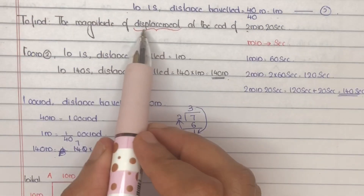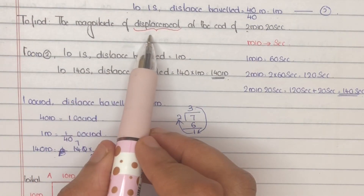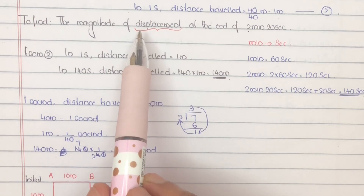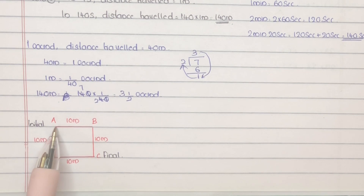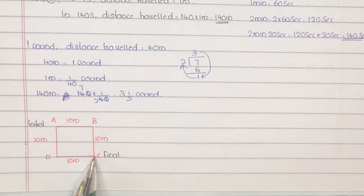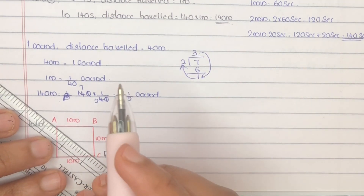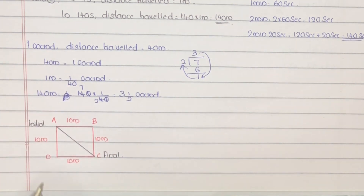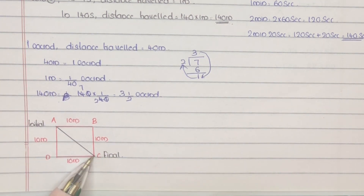The question is to find the magnitude of displacement. Displacement depends only on the initial and final points — it is the straight-line distance between them. So the magnitude of displacement is the length AC.